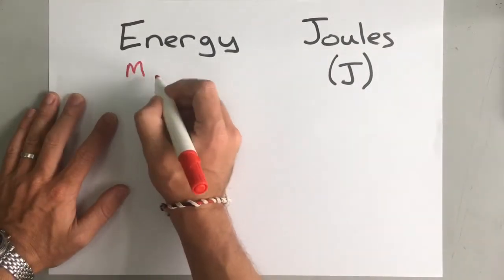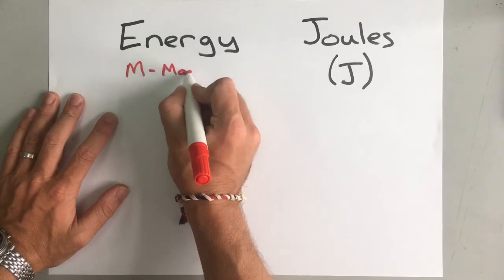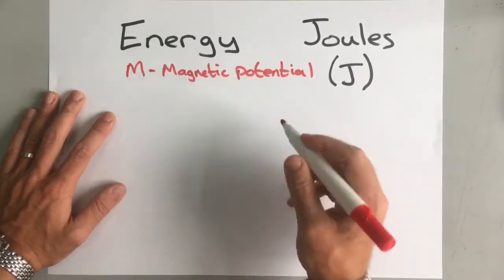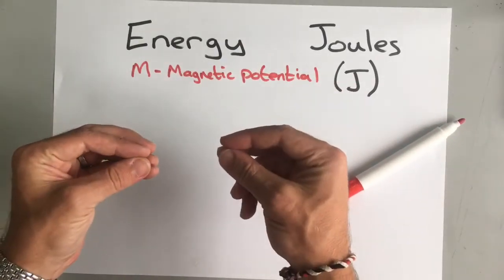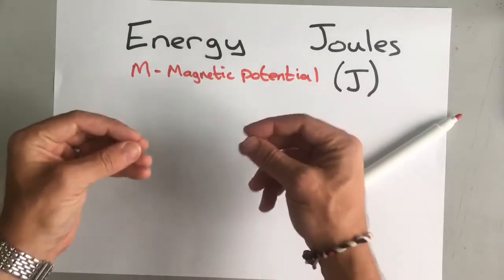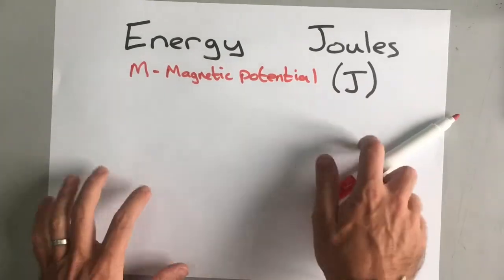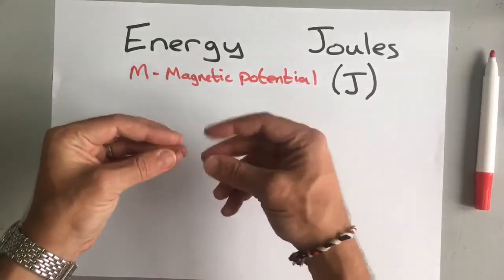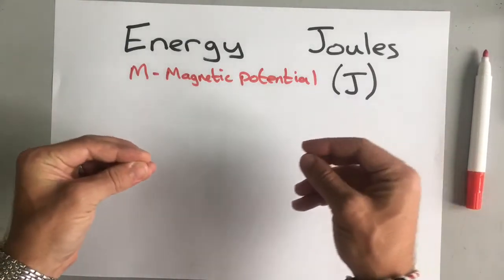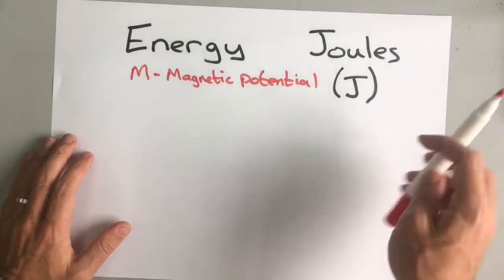So first one is magnetic potential. Magnetic potential is when you have two magnets. They have the potential—potential means possibility. They have the possibility to change that energy into something else like movement. So when you hold two magnets close to each other they either attract or repel. So they've got magnetic potential energy.